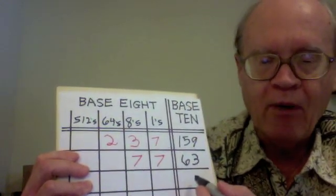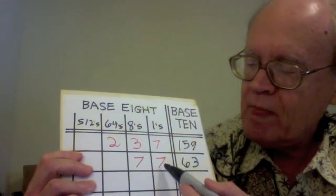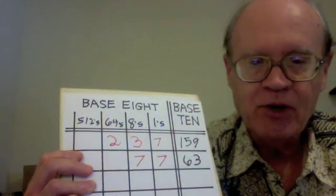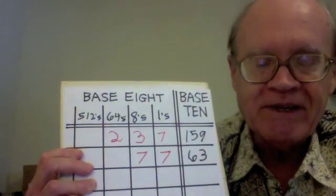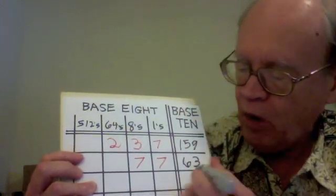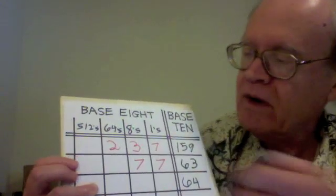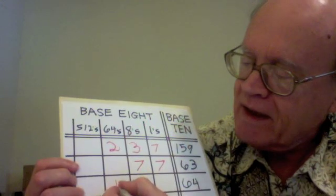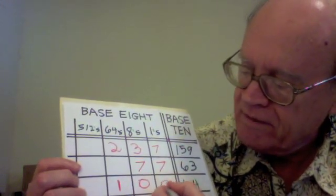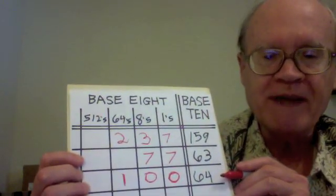Suppose we wanted one more, our 64. How would we write it in base 8? Would we put one more here, making that 7 an 8? No, we would not. We would not use the numeral 8 in base 8. Instead, to make 64, we would put a 1 in the sixty-fours column and zeros to the end. That's how we would get from our 63 to 64 in base 8.